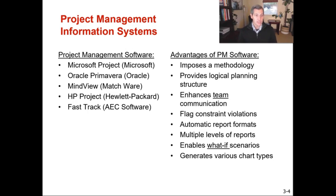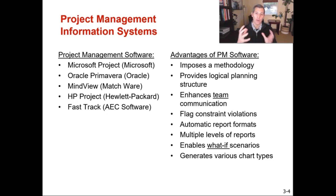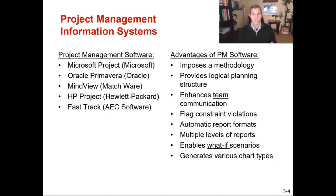Some of the main project management information systems include Microsoft Project, Oracle Primavera, HP Project, and FastTrack. These are great because they follow a strict methodology and show a logical planning structure so people know the sequence of events — Step A, Step B, Step C — when things are supposed to start, when they're supposed to be completed, and who is assigned to each activity. It also helps us know if things are not going according to plan. With tools like Microsoft Project you can view the Gantt chart, the critical path method chart, and which individuals are assigned which activities.